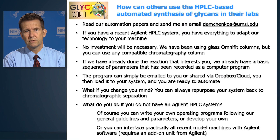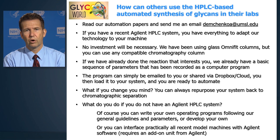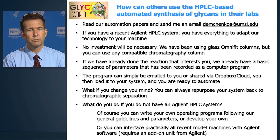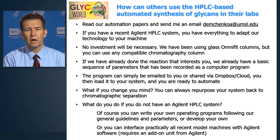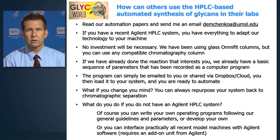How can you use this technology? I would recommend starting by reading our papers and sending me an email for further information. If you use an Agilent HPLC, you have everything needed to adapt our platform to your own needs — no additional components required, and you can use any chromatography column you have. If you want to make a sequence we've already made, we likely have a program ready, and programs can be shared via email or cloud services. If you no longer want to use the system for synthesis, you can quickly repurpose it for chromatography separation as originally intended. If you don't have an Agilent system, it can still be interfaced with Agilent software using an interface module available from Agilent.